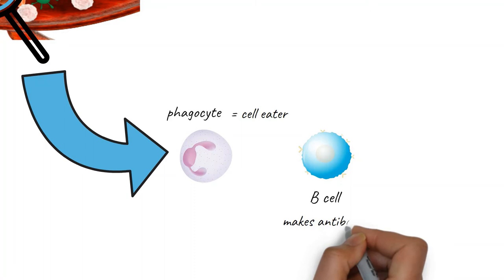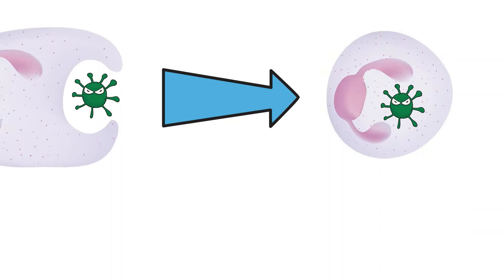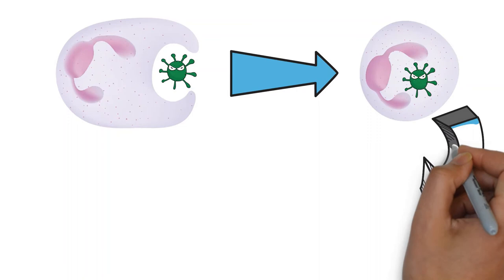Phagocytes destroy other cells. The name actually means cell eater. B cells make the protective antibodies that kill particular viruses and other diseases. When viruses get into you, the phagocytes seek them out and try to engulf them. When the virus particle is completely engulfed by the phagocyte, it is broken up and destroyed.